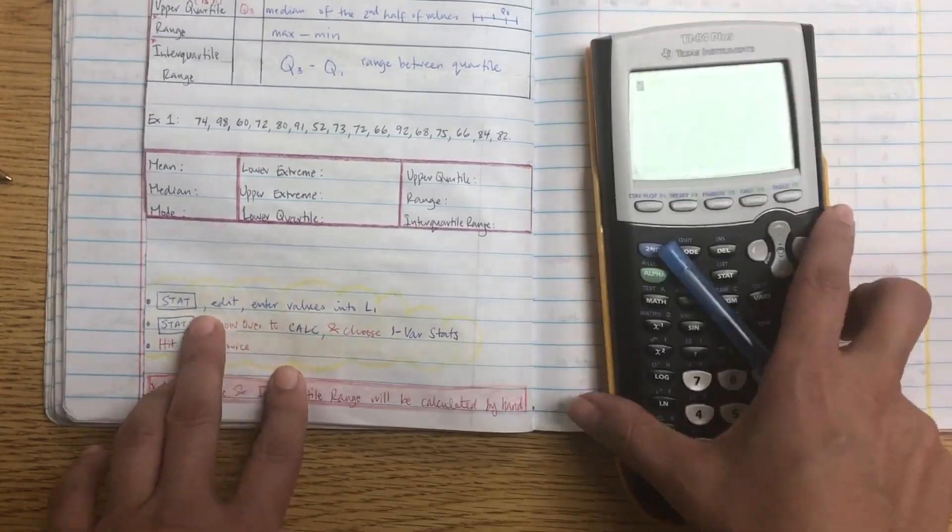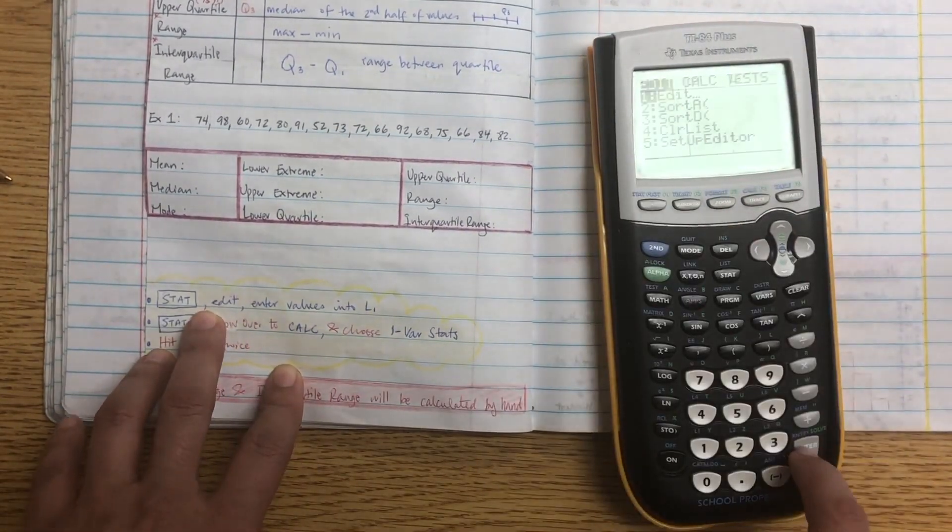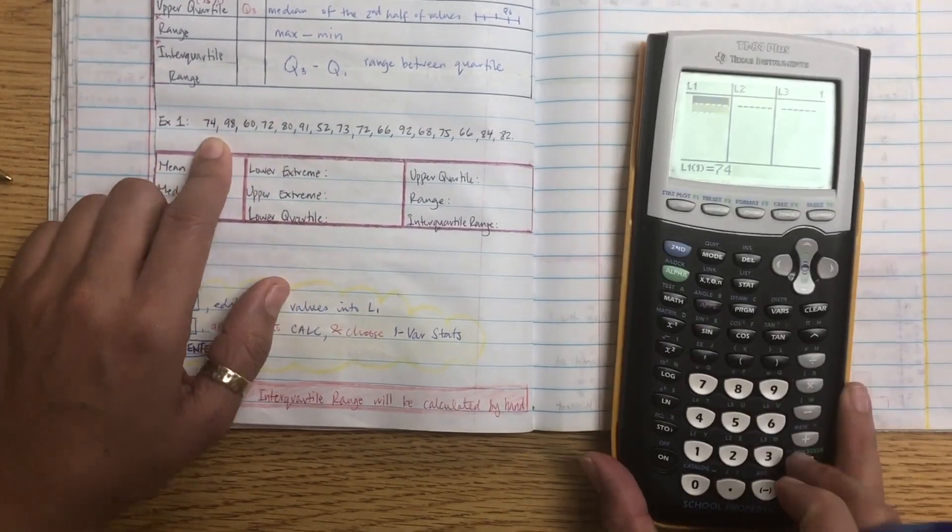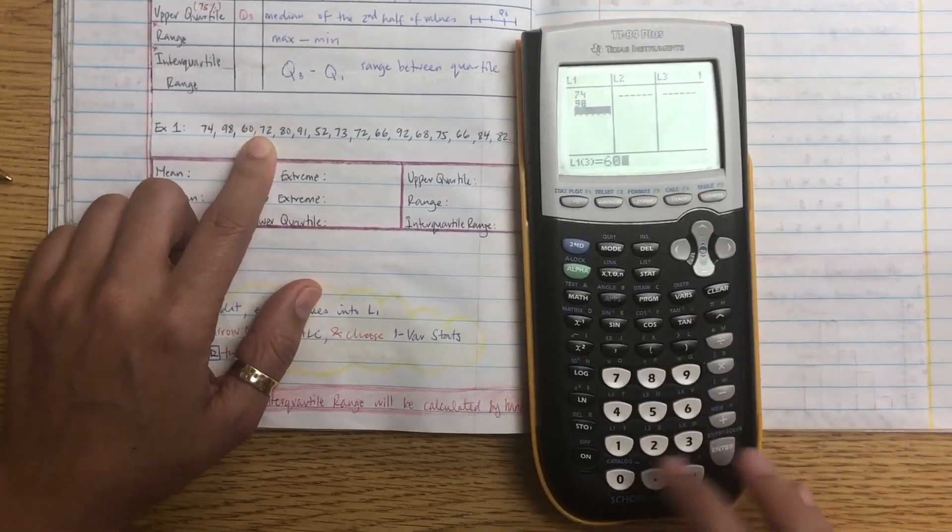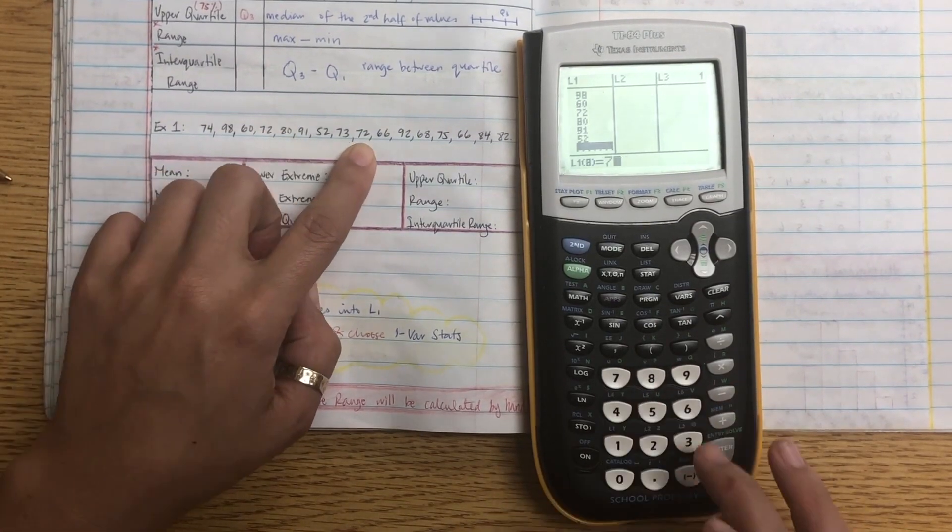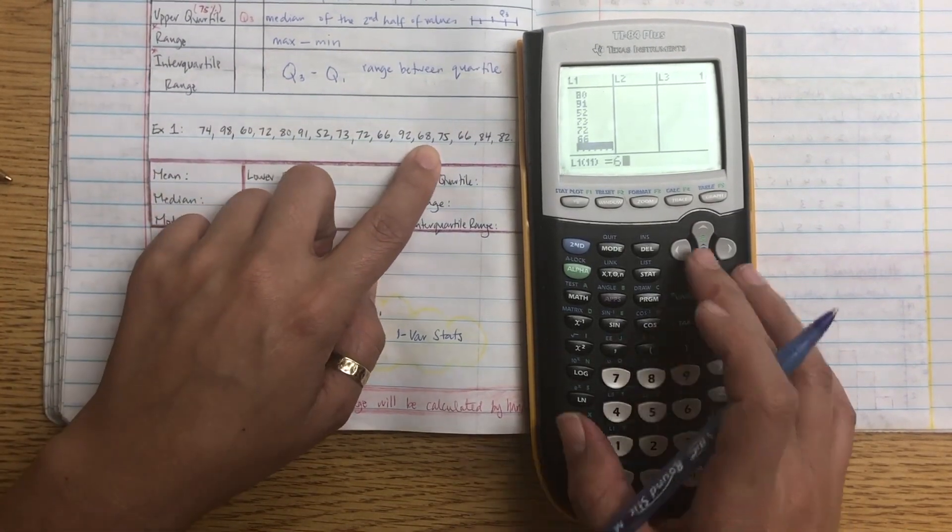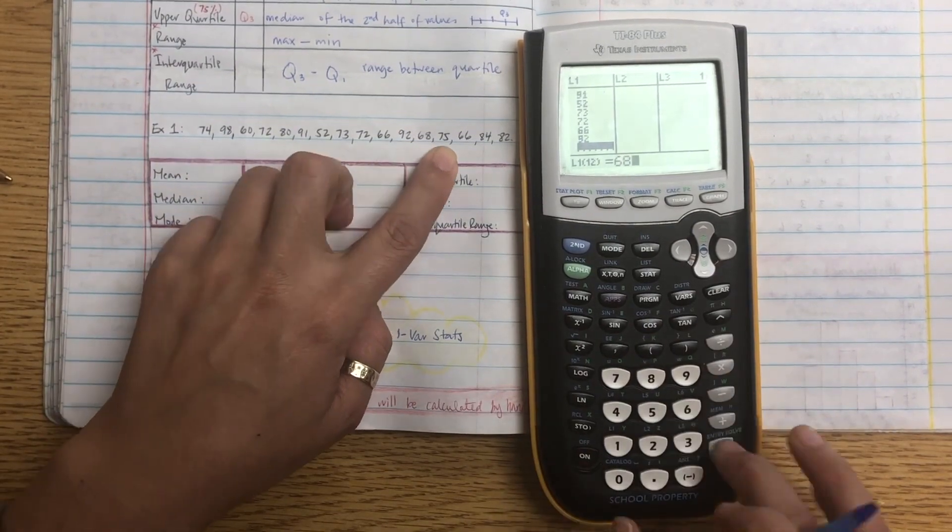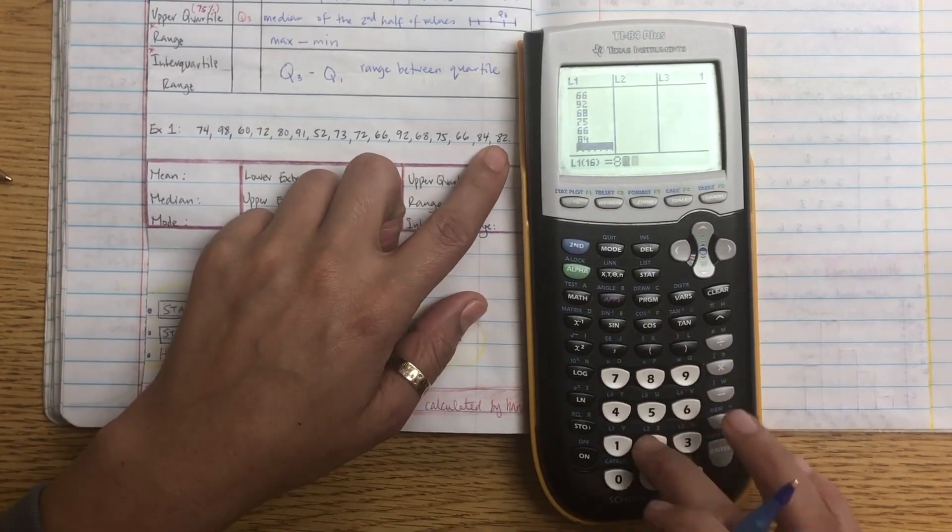So we're clearing the calculator to do this every single time. All right, then to put it in you're going to go stat, edit, and then enter your values into L1. So enter all of this. The order doesn't matter. Just make sure that you don't skip a single one. So you see I'm using my finger and moving on to the next one to make sure I don't skip any. Because if you skip one, it'll change everything.